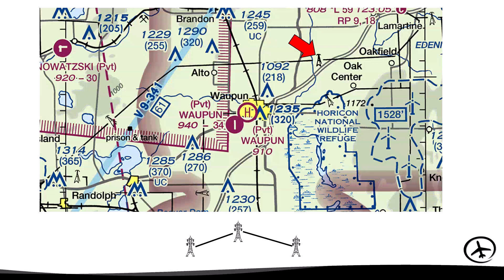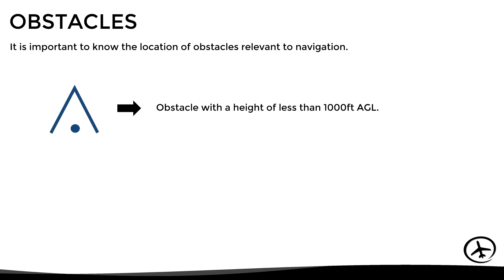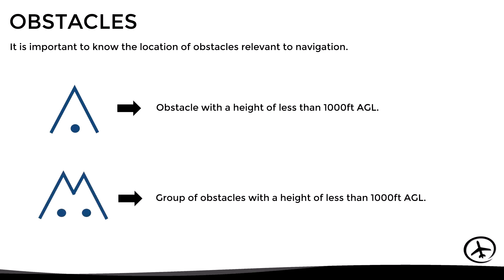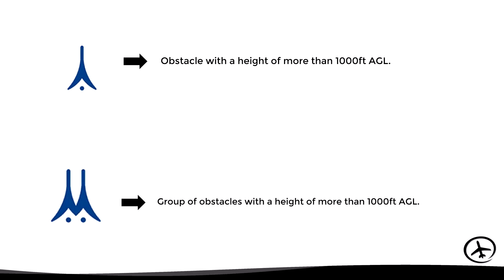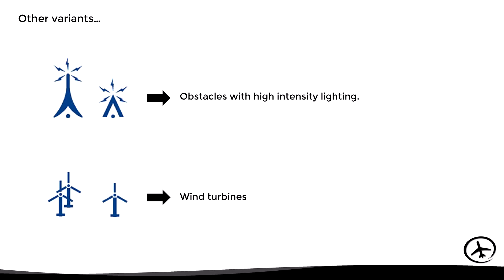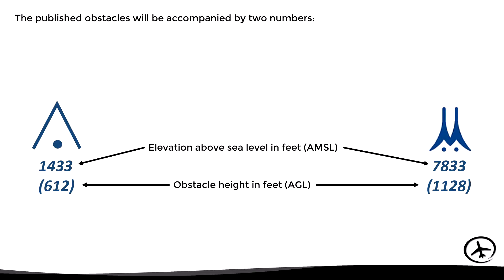Apart from power lines, there are other objects considered to be obstacles to air navigation. Obstacles with a height of less than 1,000 feet above ground level are represented by a blue triangle with a dot, and if there is more than one obstacle in the same place they will be represented by two overlapped blue triangles with two dots. Obstacles higher than 1,000 feet above ground level are represented by triangles with an extension at the top. Some charts include additional variants, such as one used for obstacles with high intensity lighting and another specifically for wind turbines.